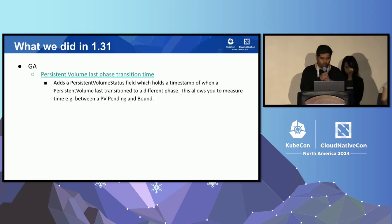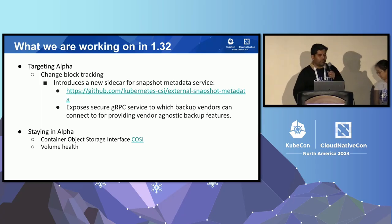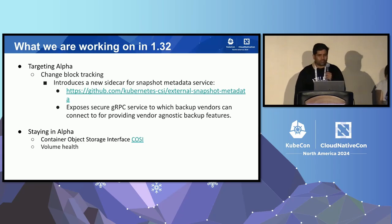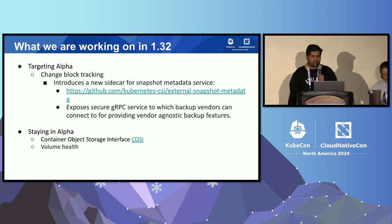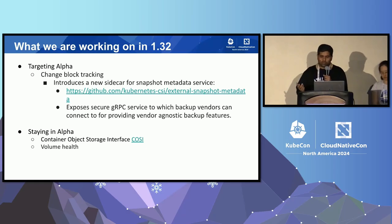I'm going to cover what we did in 1.32 and what we're working towards in next releases. One of the features we're working on in 1.32 is change block tracking, which allows a vendor-agnostic backup and snapshotting service. A driver advertises this capability, exposing a gRPC service that will allow tracking of blocks that have changed, enabling incremental backups. We are releasing a sidecar called snapshot metadata sidecar which will expose a TLS gRPC service on which the backup vendor can listen and get the changed blocks.